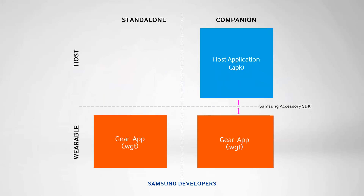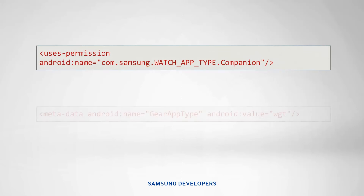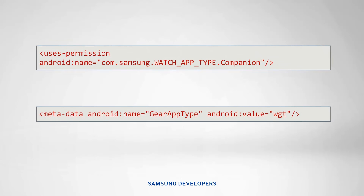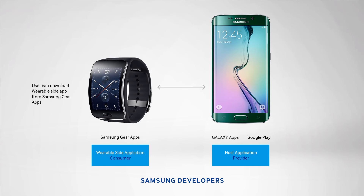To enable host devices to recognize a companion type app, the following permission must be added to the host app's Android manifest file. Also, metadata must also be added to distinguish between gear app types. Host-side applications are uploaded and can be downloaded through Google Play Store or Galaxy Apps, while Samsung Gear Apps handle gear applications.